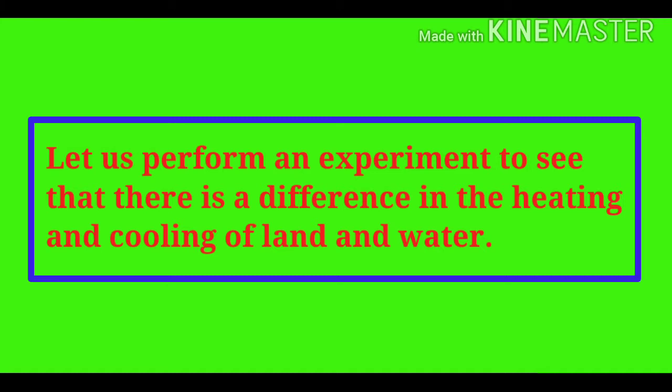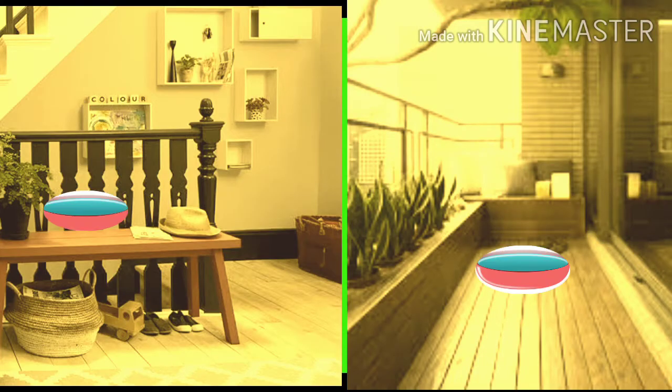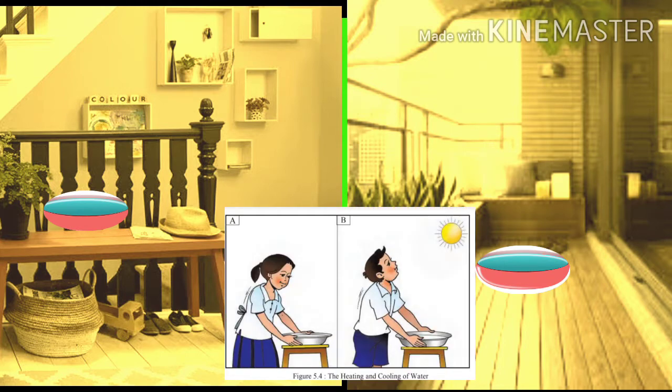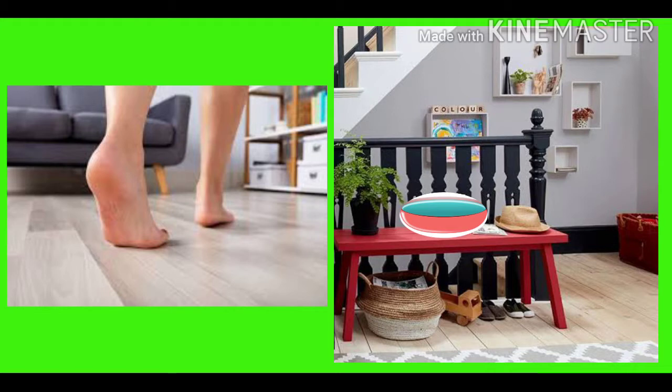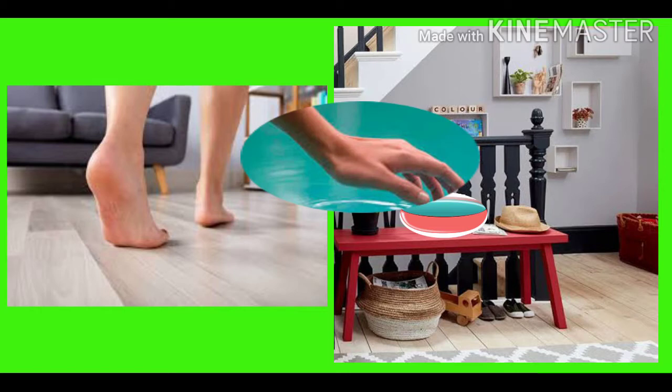Let us perform an experiment to see that there is a difference in the heating and cooling of land and water. Do it yourself: take two pots of the same size and fill them with water equally. At sunrise, keep one of the pots inside the house and the other one outside. See that it remains in the sun all the time as shown in the figure.